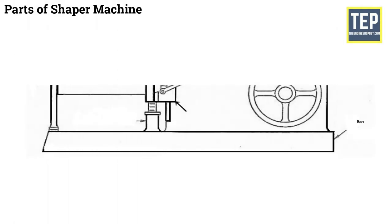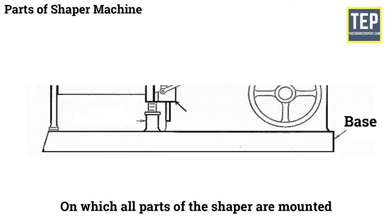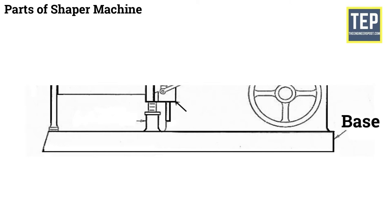The base is the necessary support required for all machine's tools. The base is hollow casting made of cast iron to resist vibration and on which all parts of the shaper are mounted. It can take up the entire load of the machine and the force set up by cutting tool over the work.